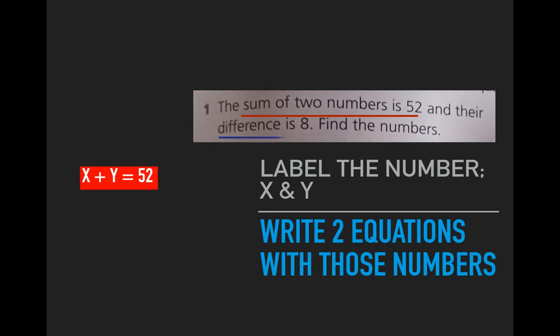The second bit of information is underlined in blue. The difference between the two numbers is 8, so if I subtract x from y I'm going to get 8. Now you'd solve those via simultaneous equations.